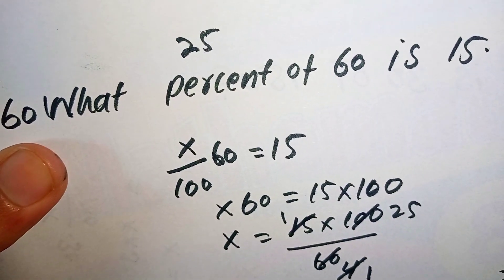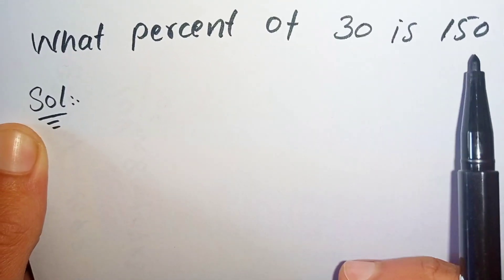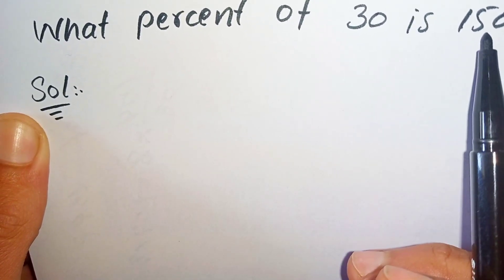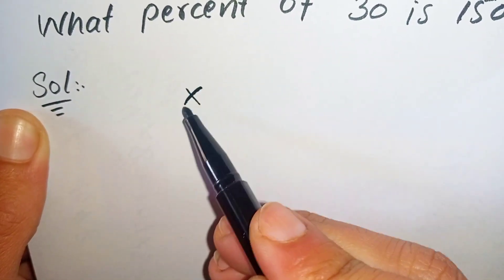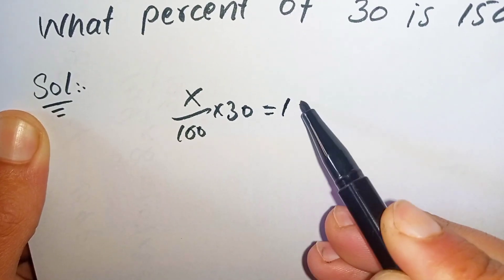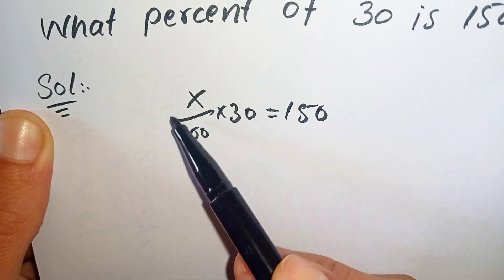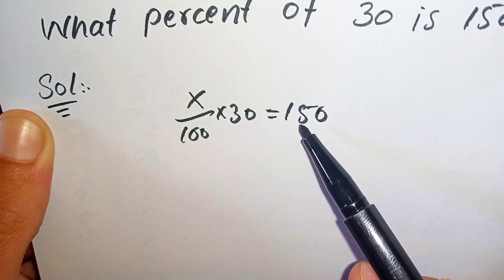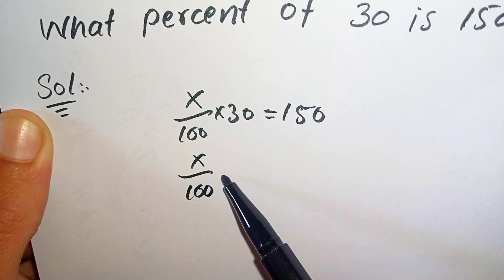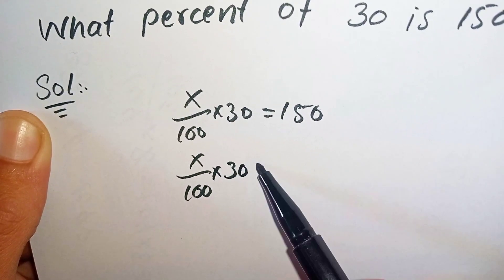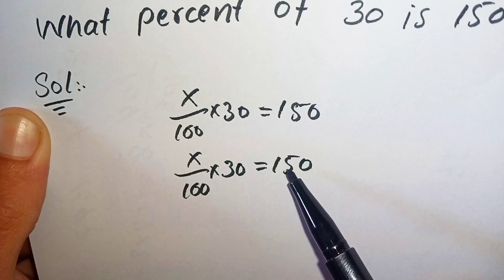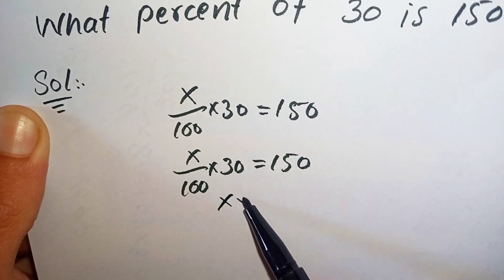Now we are going to find what percent of 30 is 150. So we suppose that X percent of 30 is 150. So X over 100 multiplied by 30 is equal to 150. So X times 30 is equal to 150.